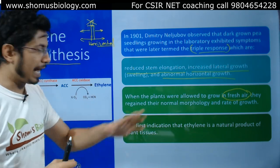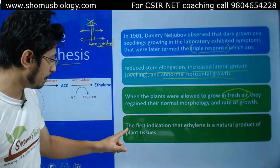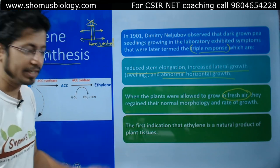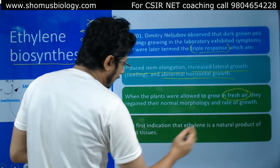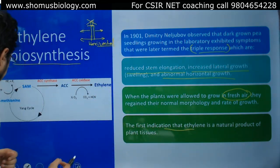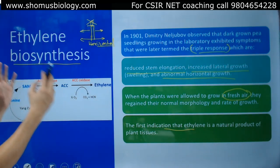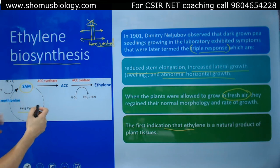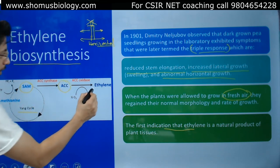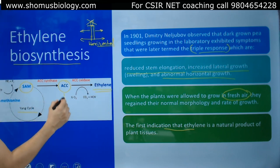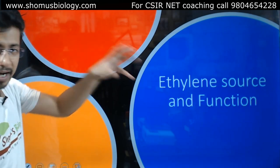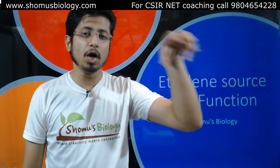Ethylene allows plants to grow in the horizontal plane. The first indication was that ethylene is a natural product of plant tissues. When we talk about the biosynthesis of ethylene, we start with the SAM-mediated Yang cycle, using ACC as an intermediate to produce ethylene.